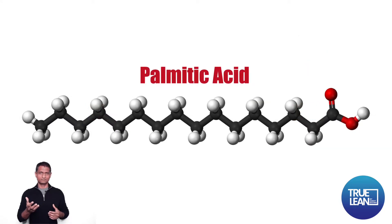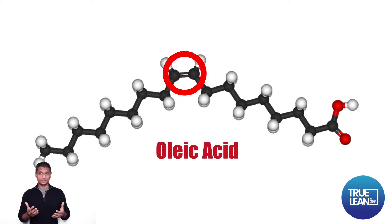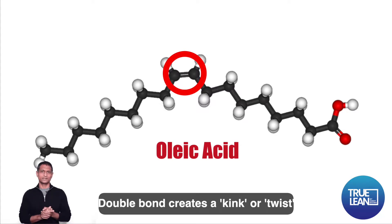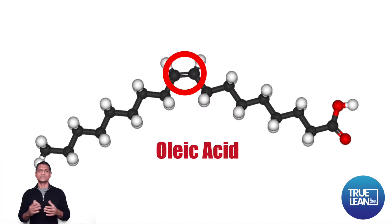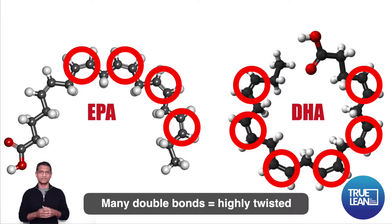Palmitic acid and oleic acid are a lot straighter or less bent compared to EPA and DHA, and the reason is the difference in double bonds. Palmitic acid has no double bonds — it's a saturated fat, so its structure is essentially straight. Oleic acid has exactly one double bond, giving it a kink so it's slightly bent. But this is nothing compared to EPA or DHA, which are extremely bent or twisted in structure.